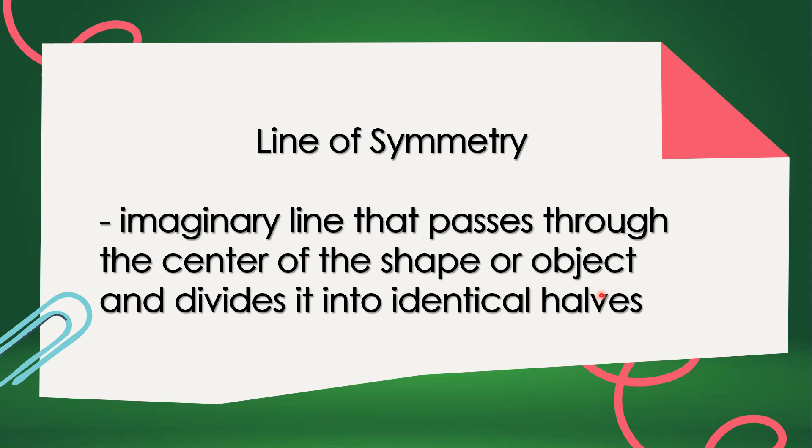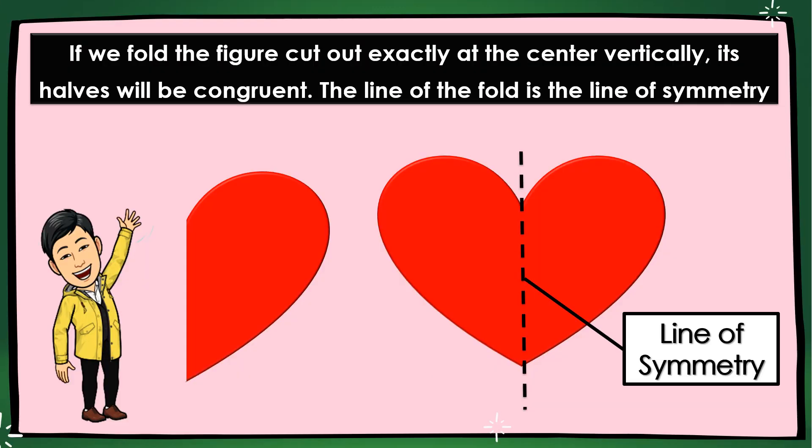Let's have examples. If we fold the figure cut out exactly at the center vertically, its halves will be congruent. The line of the fold is the line of symmetry. Just like this. This is the line of symmetry.